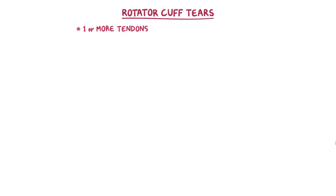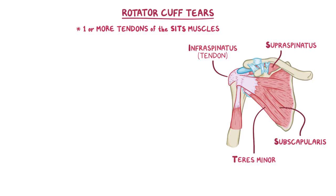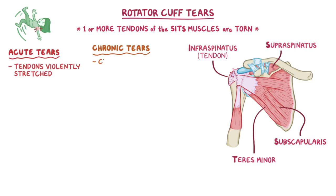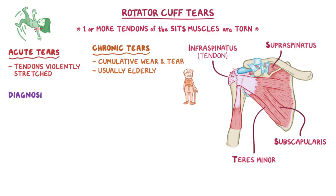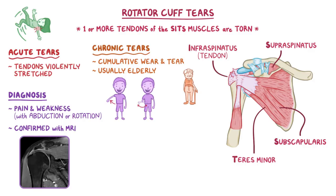As a quick recap: in rotator cuff tears, one or more tendons of the SITS muscles — supraspinatus, infraspinatus, teres minor, and subscapularis — of the rotator cuff are torn. Acute tears happen when the tendons are violently stretched, like falling on an outstretched arm. Chronic tears result from cumulative wear and tear on the tendon, and usually occur in the elderly. The diagnosis is mainly based on pain and weakness, specifically with abduction or rotation, and can be confirmed with an MRI. Treatment involves rest, ice, and pain control, but if that fails, surgery may be needed.